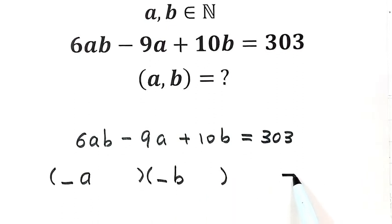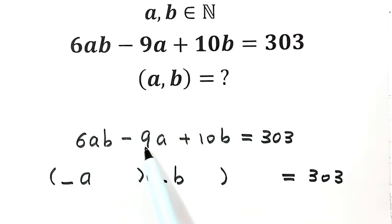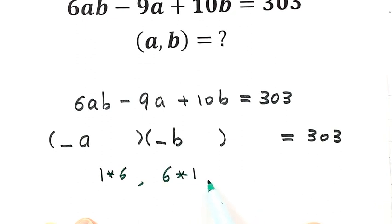The right-hand side equals 303. Now, how to pick the two numbers? The two numbers must satisfy the following conditions: their product equals 6, the number before a is a factor of 9, and the number before b is a factor of 10. The different combinations for 6 are: 1 times 6, 6 times 1, 2 times 3, or 3 times 2.